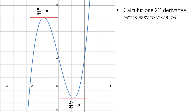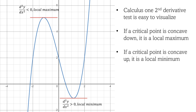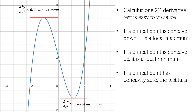The second derivative test in Calculus 1 was easy to understand visually. As a brief synopsis, the second derivative can be thought of as the concavity of a point on the function. If a critical point has a second derivative less than 0, then it is concave down and thus is a local maximum. If a critical point has a second derivative greater than 0, then it is concave up and thus is a local minimum. If the second derivative at a critical point is 0, we say the test has failed.